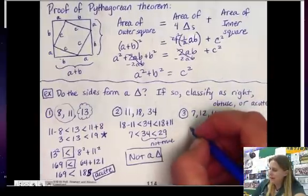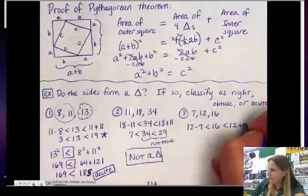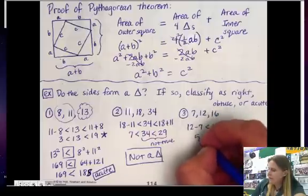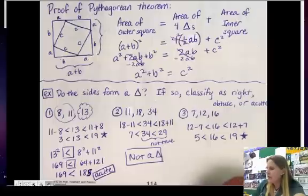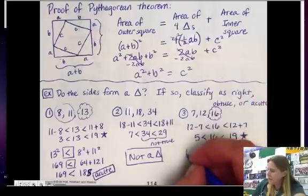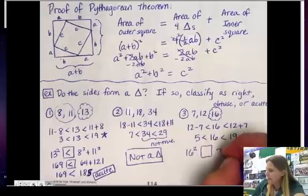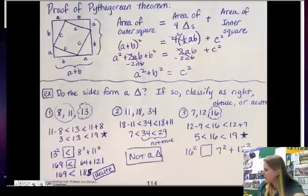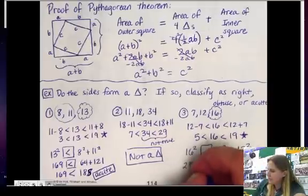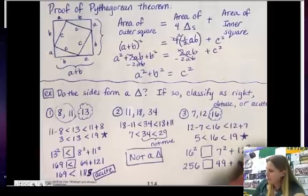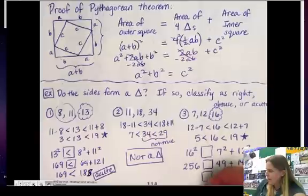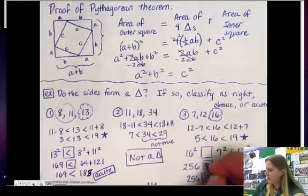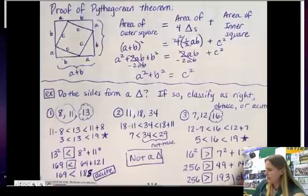For 7, 12, and 16: first check if it's a triangle. 12 minus 7 equals 5, which is less than 16, which is less than 19. Yes, it's a triangle. Now, 16 squared is 256, compared to 7 squared plus 12 squared which is 49 plus 144 equals 193. Since 256 is greater than 193, c squared is greater than a squared plus b squared, which means this is an obtuse triangle.